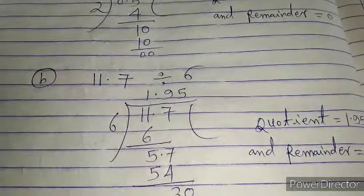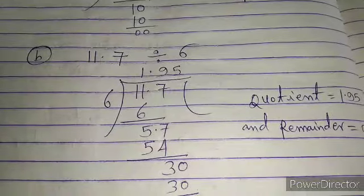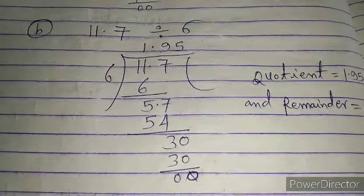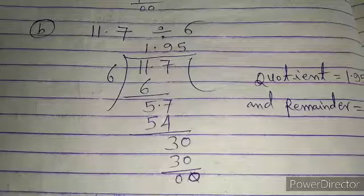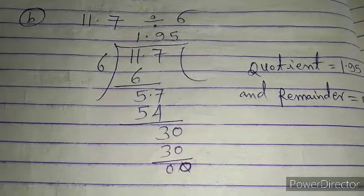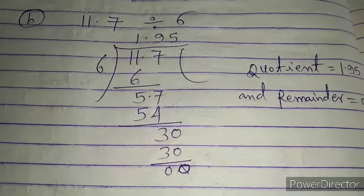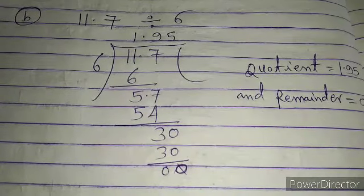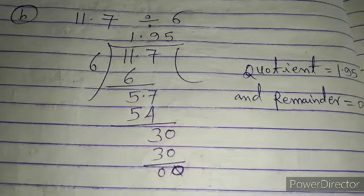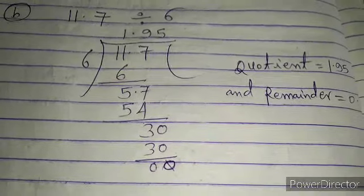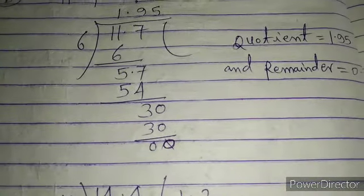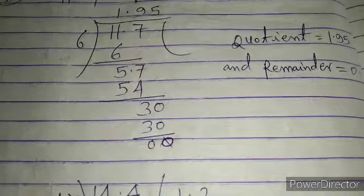In this type of division, when the remainder does not become equal to 0, we keep adding 0 until the remainder becomes 0. When 11.7 is divided by 6: 6×1 is 6, subtracting from 11 gives remainder 5. Then 6×9 is 54, remainder is 3, which is not 0. So we add 0: 6×5 is 30, remainder becomes 0. The quotient is 1.95 and remainder is 0.